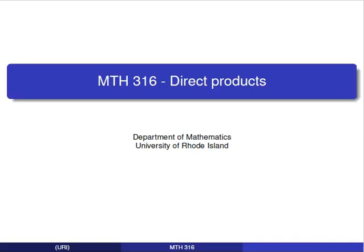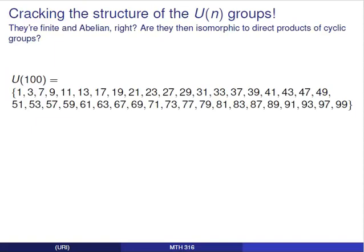Welcome back. In this third and final video of our discussion of direct products, we're going to take a look at the groups U(n) and try to decide what they look like.